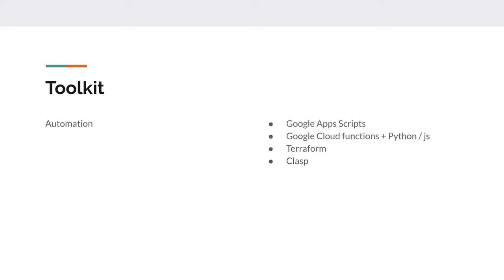We used Google Apps Script to send data to another API to refresh user data. A positive point is that it's free — they have some quota but you can start without paying. Also, you don't have to manage your own server or cloud — you just write the script and Google handles supporting it. There are also Google Cloud Functions where you can write in Python or JavaScript, which are more powerful but paid based on memory usage.